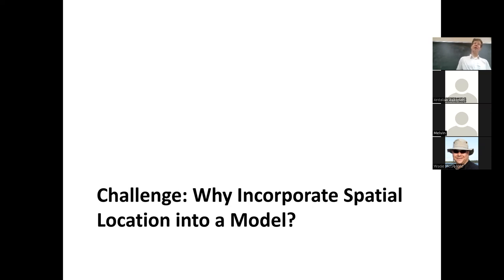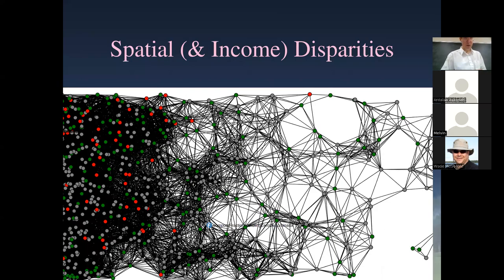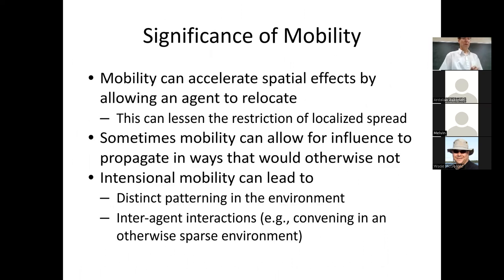Mobility is an extra layer on top of spatial context. It takes spatial situation of agents in space and allows them to move around. Motivations for spatial embedding include spatial clustering, emergent behavior when you intervene differently across space, and different types of spatial interventions like creating a cordon sanitaire — a blocking area around a community.